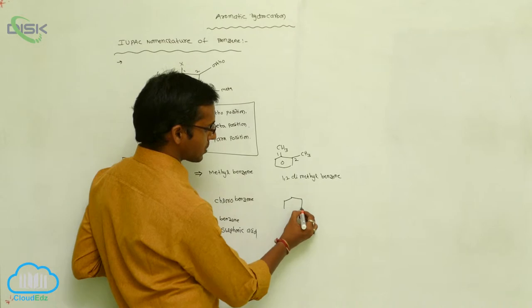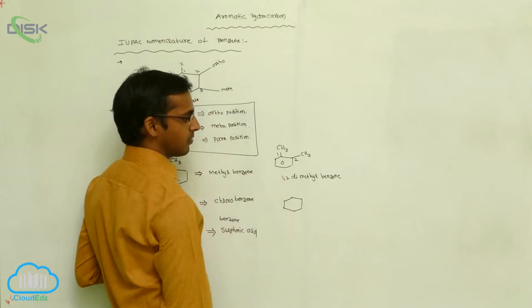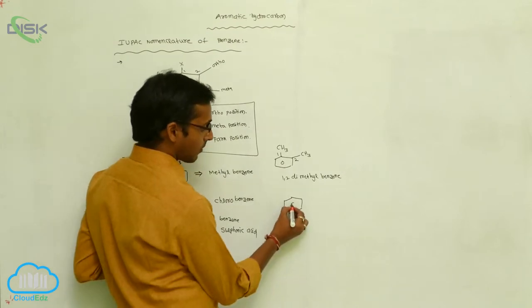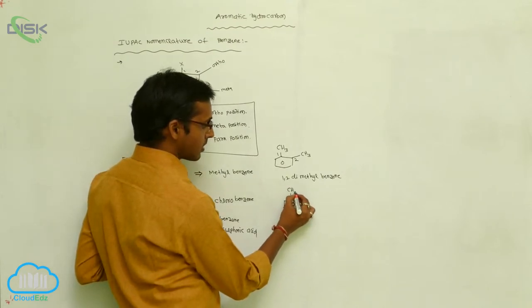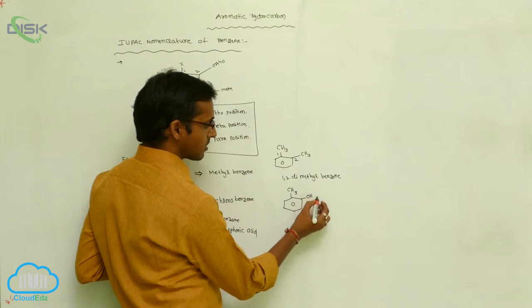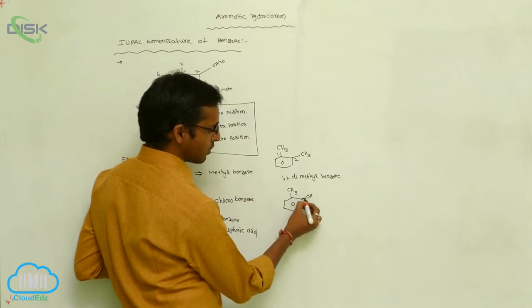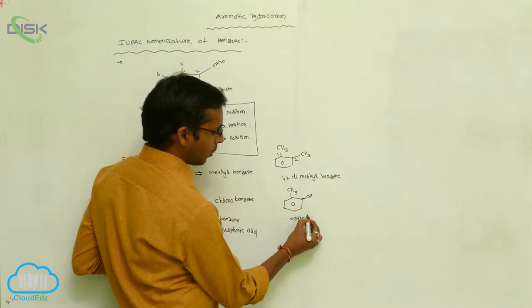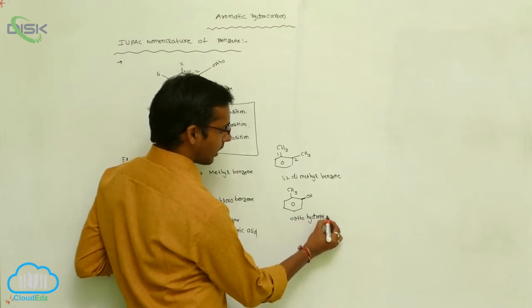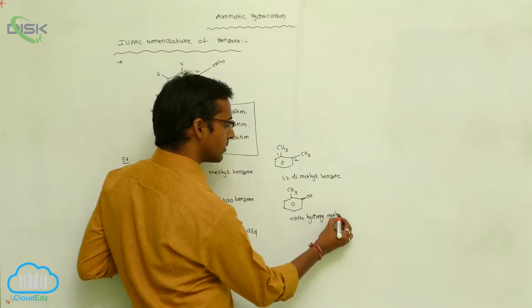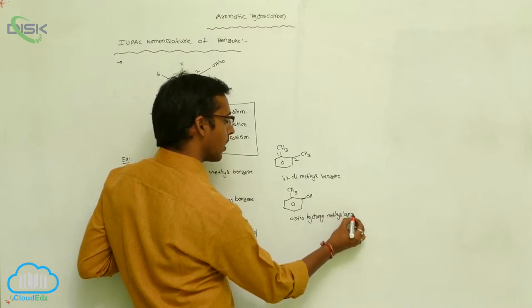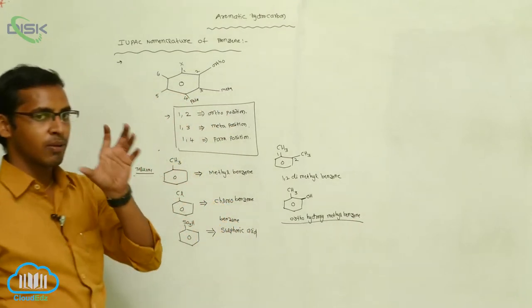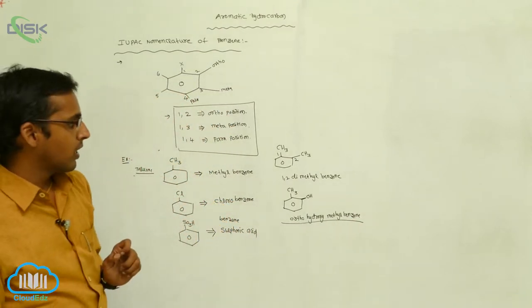According to position, this is called ortho-dimethylbenzene. Or, if a methyl group is present here and an OH group is also present, which position is the OH group in? Ortho position — means ortho-hydroxymethylbenzene. Write the substituents and their positions first, giving ortho-hydroxymethylbenzene.